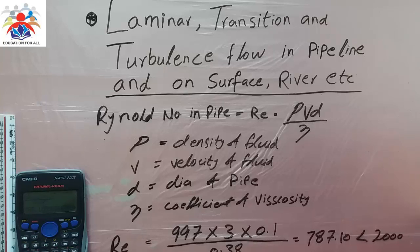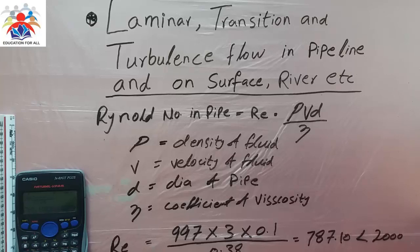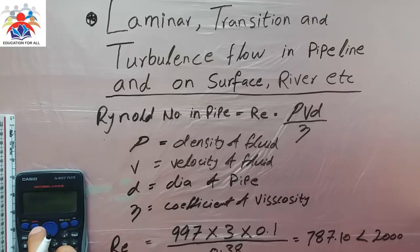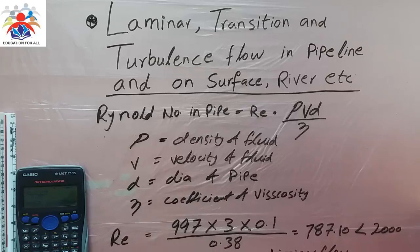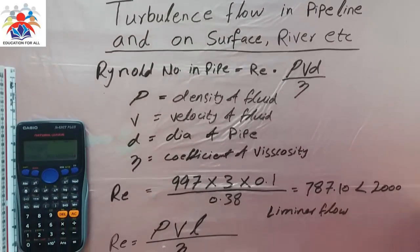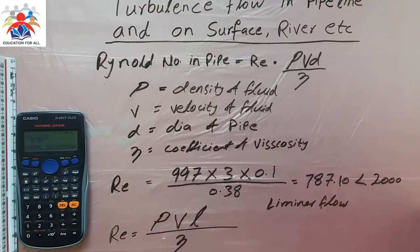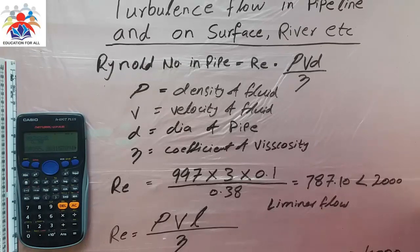So the density would be the same — 999 — multiplied by 3, and I'm going to take an initial length of 5 meters, divided by the viscosity, which is also the same. Plugging the numbers into the formula, we get 39,355.26. As you can see, this is quite a large number, meaning our flow is turbulence, which is greater than 4000. This example is particularly for the riverbed or canal bed.